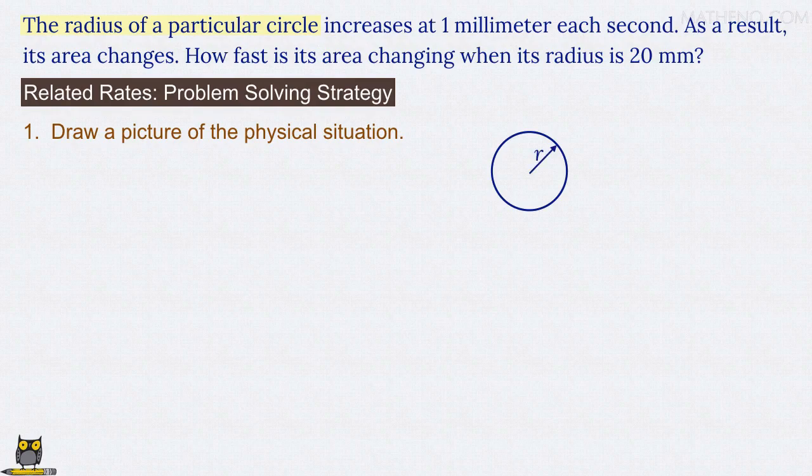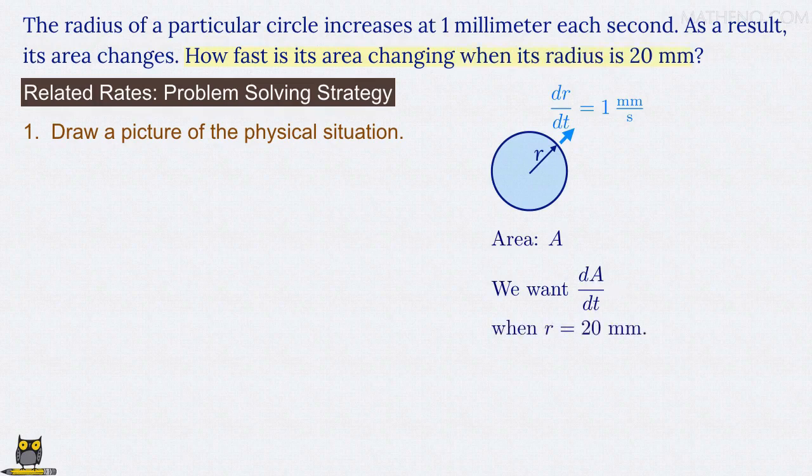The problem gives us the rate at which the radius increases. That rate is dr/dt, the rate at which the radius r changes with respect to time t, and that equals one millimeter per second. The problem asks us something about the circle's area that we'll label A. The problem wants us to find how fast that area is changing, which means we need to find the rate dA/dt, the rate at which the area A changes with respect to time t. We want that rate at a particular instant, when r equals 20 millimeters.